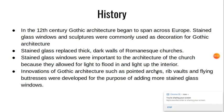So, the history of stained glass: in the 12th century, Gothic architecture began to spread across Europe. Stained glass windows and sculptures were commonly used as decoration for Gothic architecture. Stained glass replaced the thick, dark walls of Romanesque churches. Stained glass windows were important to church architecture because they allowed light to float in and light up the interior. Different innovations in Gothic architecture were made for the purpose of adding more stained glass windows, such as pointed arches, rib vaults, and flying buttresses.